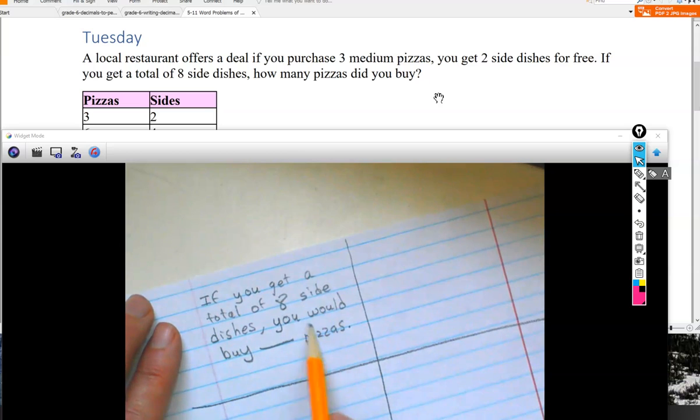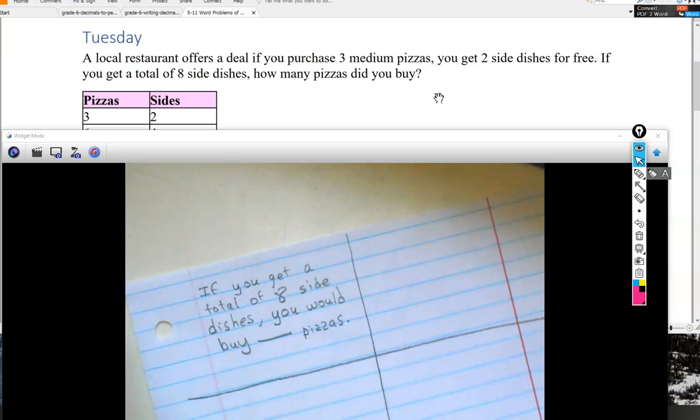Pizzas definitely needs to be in there. Same with buy. If you have this whole part about it, if you get a total of eight side dishes, great. That's actually more detail for your answer sentence.